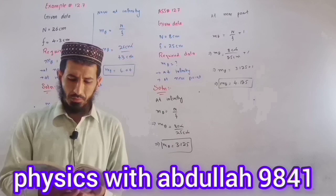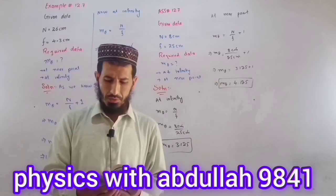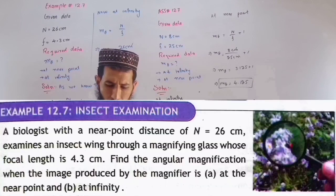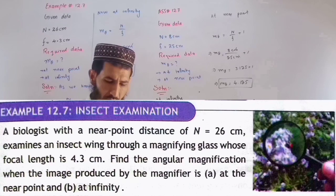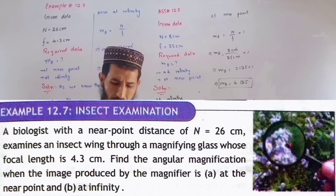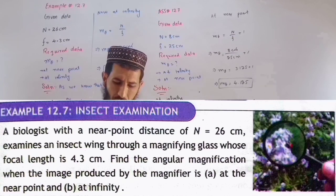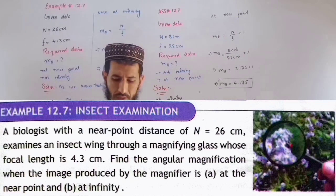Bismillah ar-Rahman ar-Rahim. Now let's get started with Example 12.7 of assignment 12.7. A biologist with a near point distance of n equal to 26 cm examines an insect wing through a magnifying glass whose focal length is 4.3 cm.